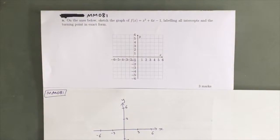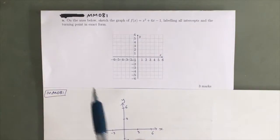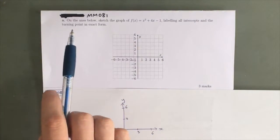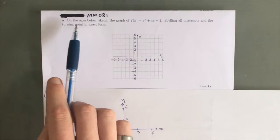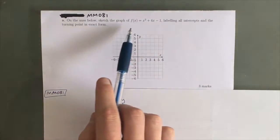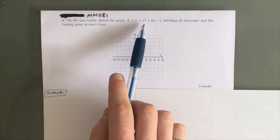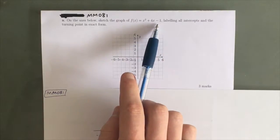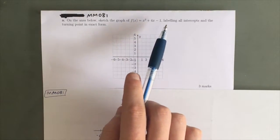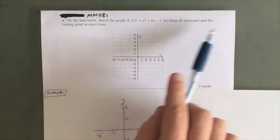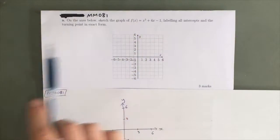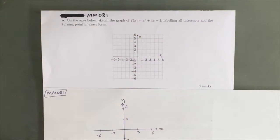Hey guys, this is question MM081 of the Maths Methods Sharpen Study Guide. We've got a question on the axes below: sketch the graph of f of x equals x squared plus 4x take 1, labeling all intercepts and the turning point in exact form.